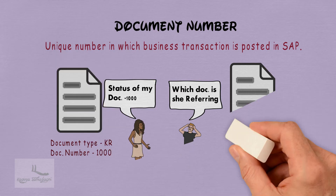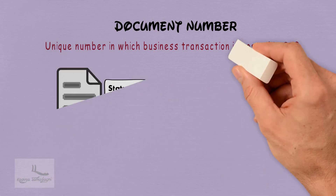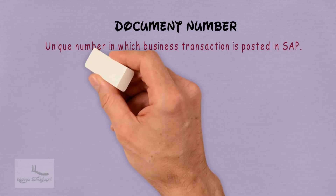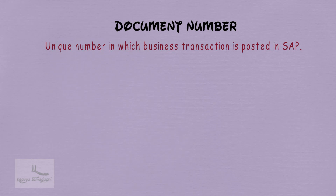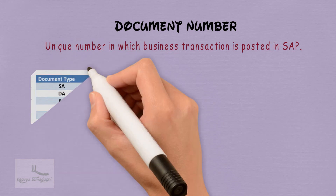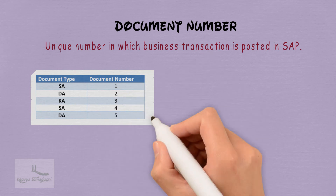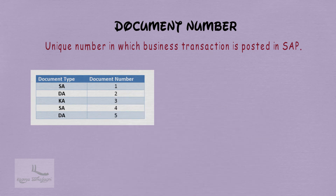As a SAP FI consultant, you configure the document numbers to be unique for each document type. That means the system will generate a unique document number for each business transaction. Does this solve the business issue in document numbering? Let's consider a scenario.